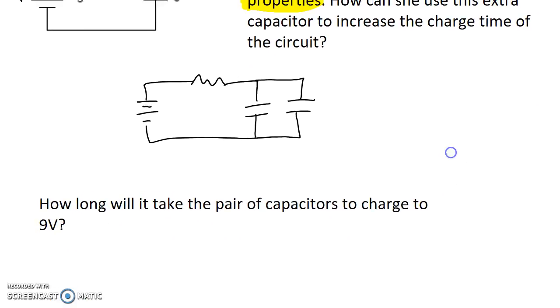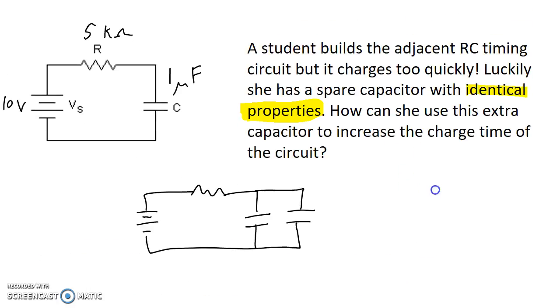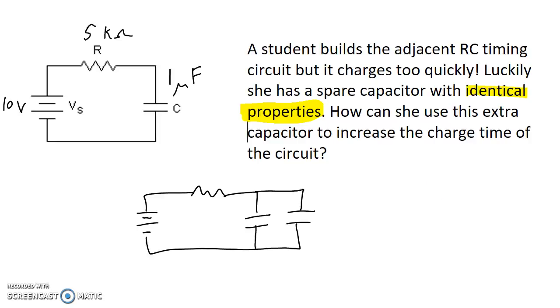The next question though is how long will it take now for the pair of capacitors to charge to 9 volts? So the idea is that when we start, the capacitor is uncharged and so has 0 volts across it. But as charge starts to build up, the voltage increases until it matches the voltage of the source. So the voltage here at the capacitor is going to start at 0 and increase through 1, 2, 3, 4, 5, 6, 7, 8, 9 to 10. How long is it going to take to reach 9 volts?